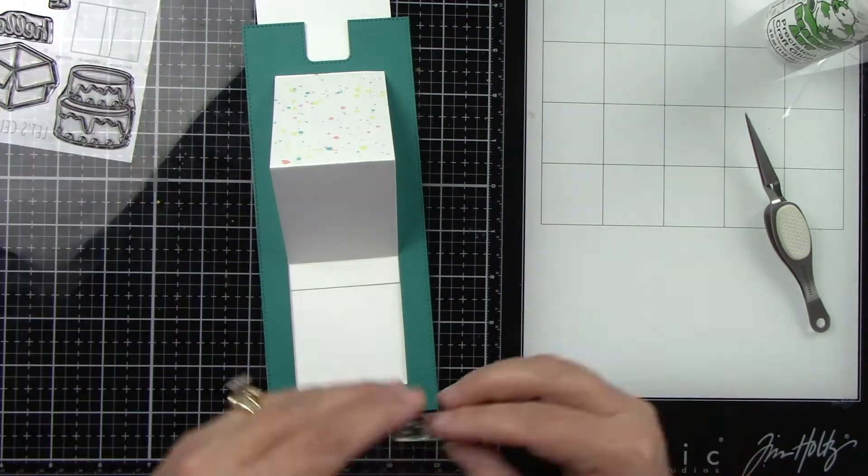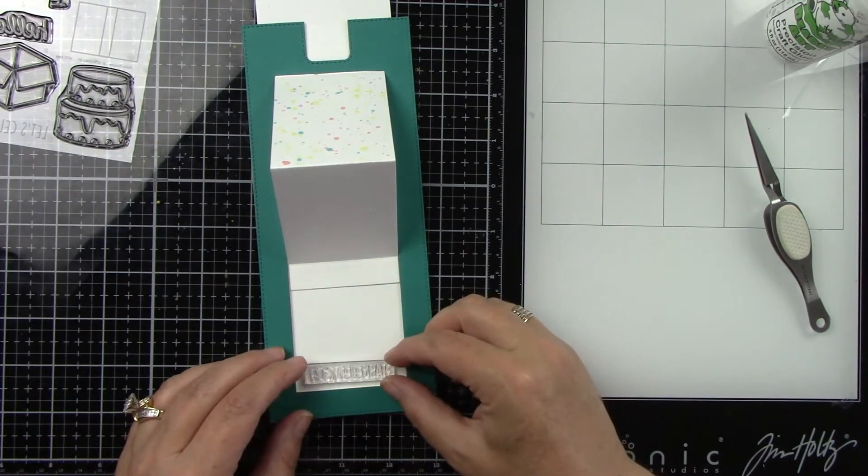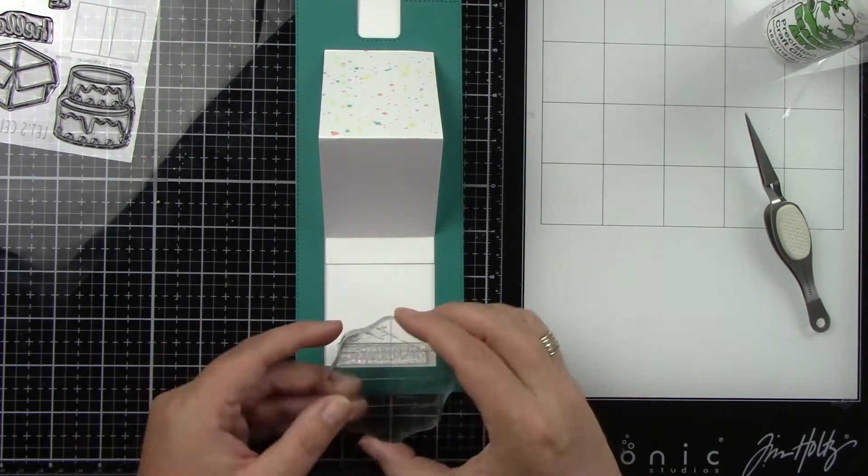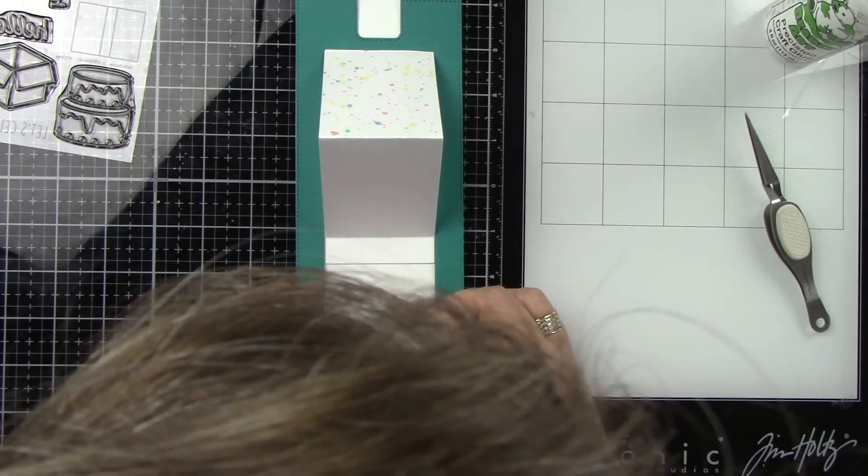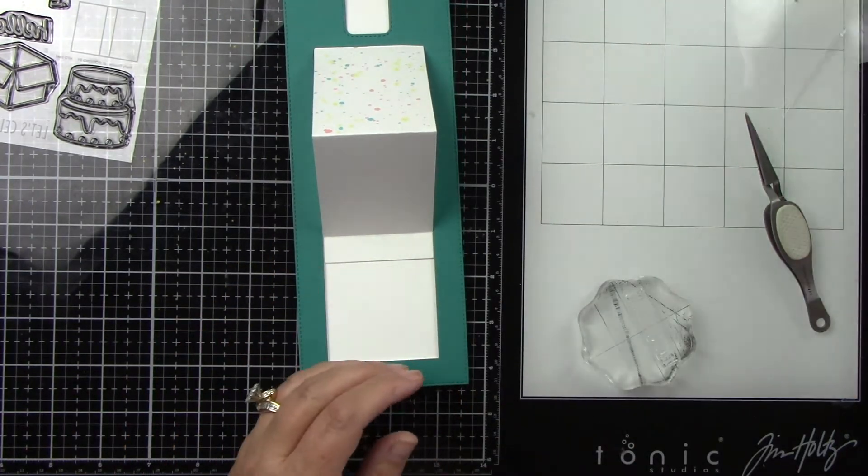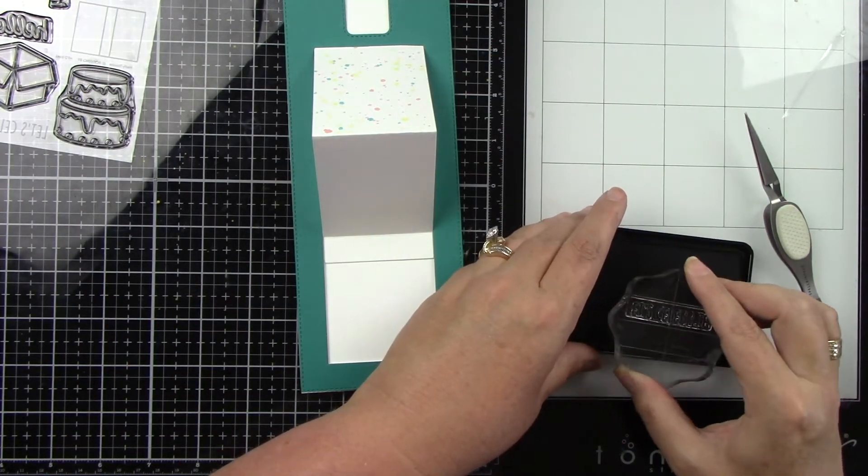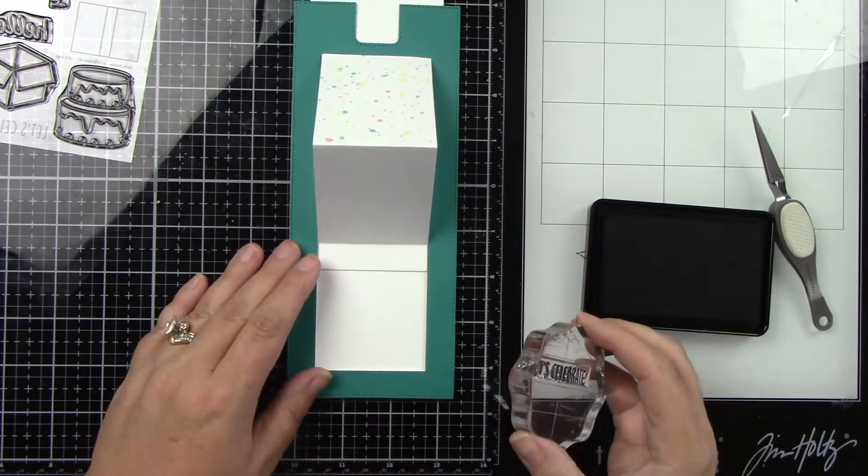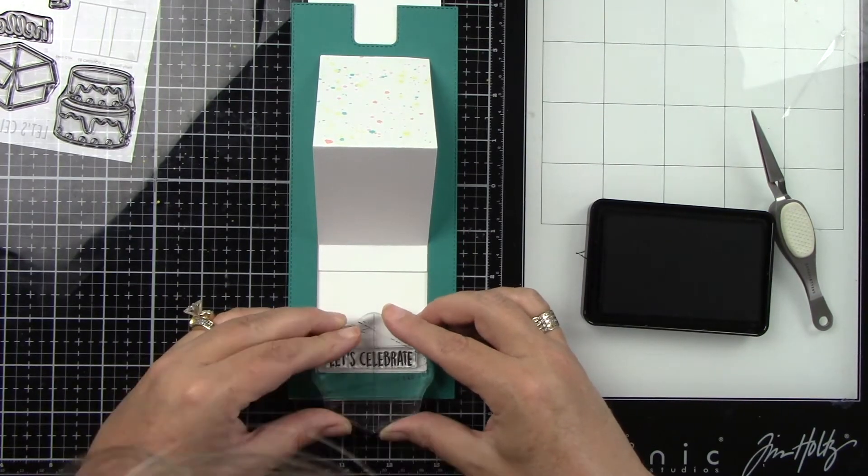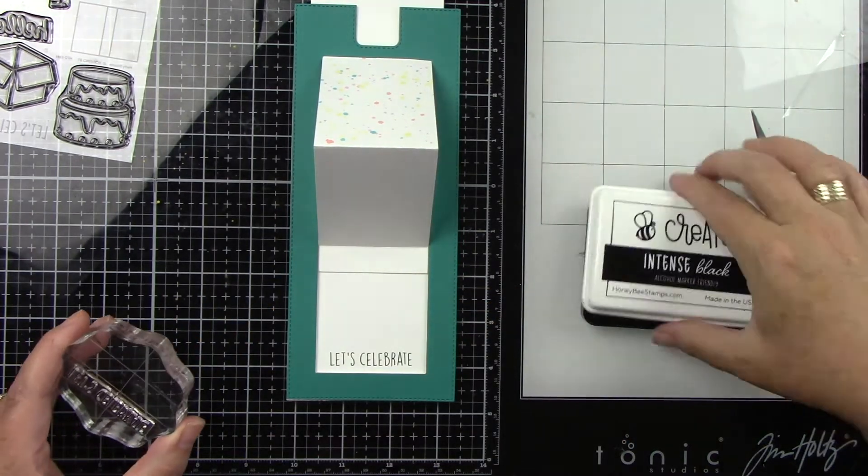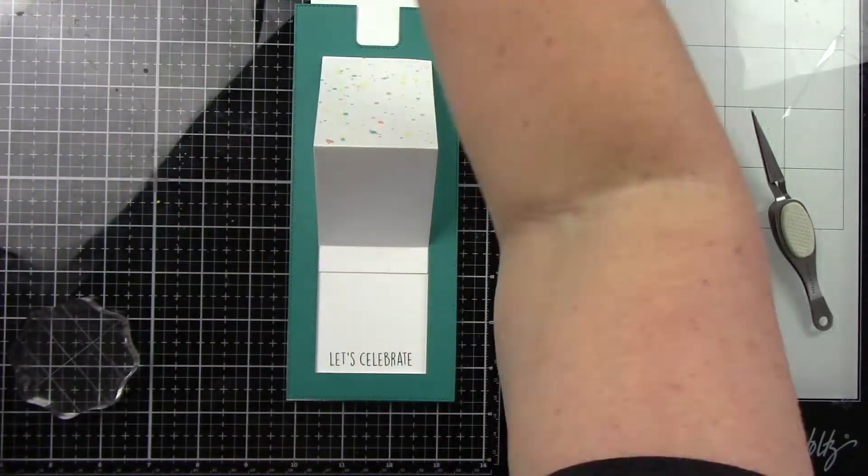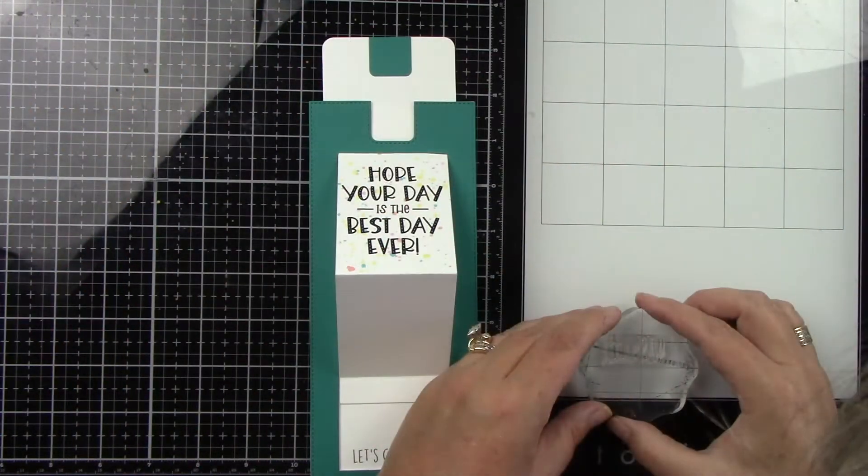I am going to stamp a sentiment on the inside here, but I can't use it in the Misti because that piece has to be popped up. I'm just going to use an acrylic block, which made me honestly quite nervous. I try to avoid acrylic blocks, especially for sentiments. This says let's celebrate from the Popping By stamp set.